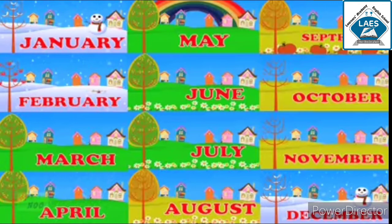Then May: M-A-Y, May. Then June: J-U-N-E, June. July: J-U-L-Y, July. August: A-U-G-U-S-T. Then September: S-E-P-T-E-M-B-E-R. Then October: O-C-T-O-B-E-R.